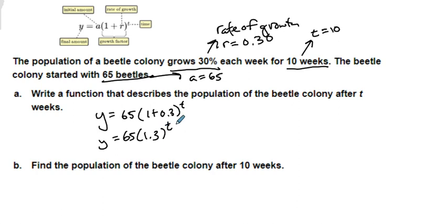And then when they tell you t, that's what you figure out. So now in the second one they say find the population of the beetle colony after 10 weeks. So we are going to go y is equal to 65 times 1.3 to the, well my t is 10 weeks, so let's make a note here, t equals 10. Now you will take your calculator when you do these.